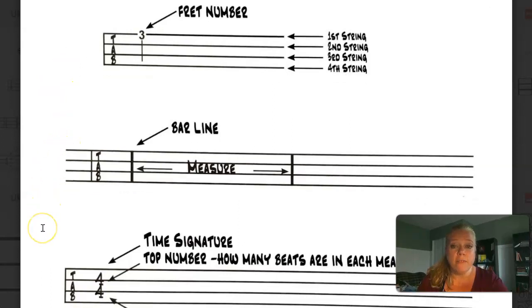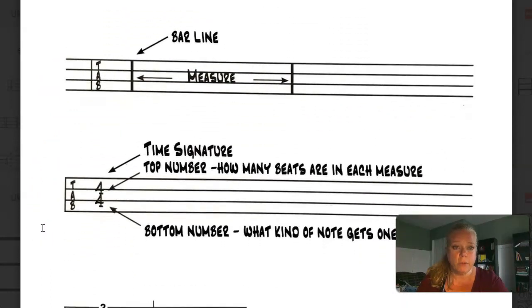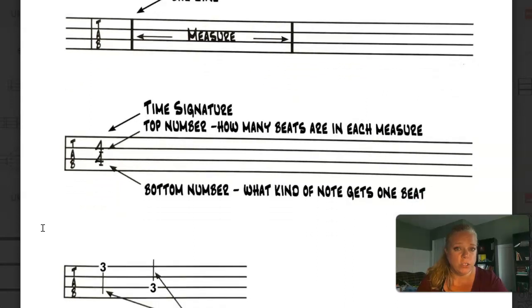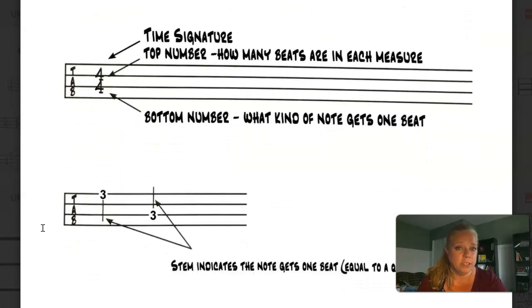There are ways of modifying tablature. Like right here, we have some bar lines and measures broken into that. That is not how tablature works. Those are not part of tablature. This is a way to give us kind of a bridge between tablature, which is good for showing us where to put our fingers, and musical notation that gives us much more information.